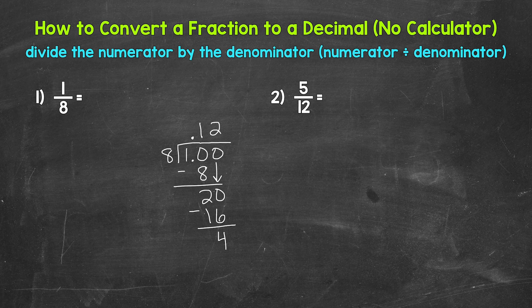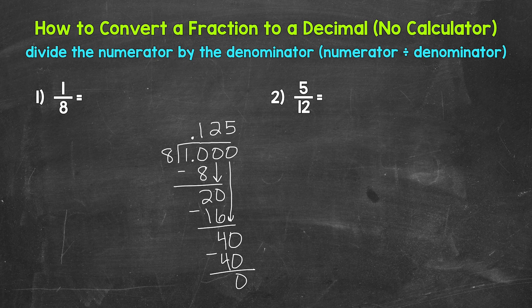We still don't have that clean cut zero at the bottom, so let's use another zero that we can bring down. Now we have 40 — 40 divided by eight. How many whole groups of eight in 40? Five, and that hits 40 exactly. Five times eight is 40. Subtract — 40 minus 40 is zero. Now we have that clean cut zero at the bottom. We are done. We get 0.125 — 125 thousandths. One eighth equals 0.125, so 125 thousandths.